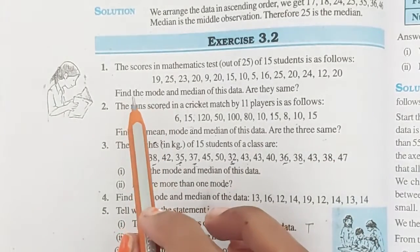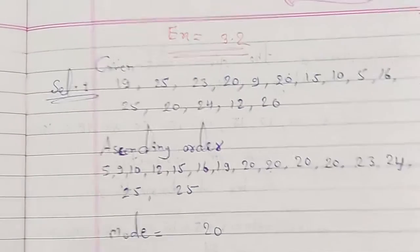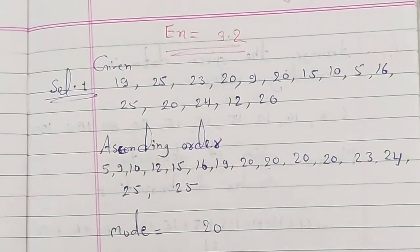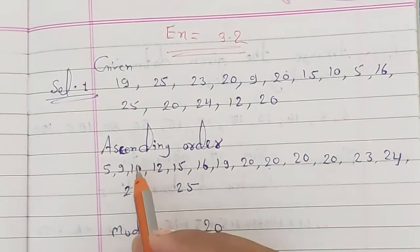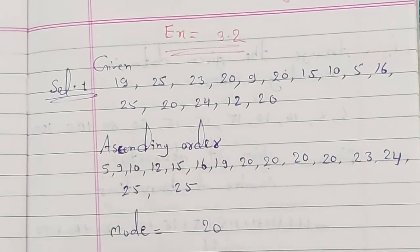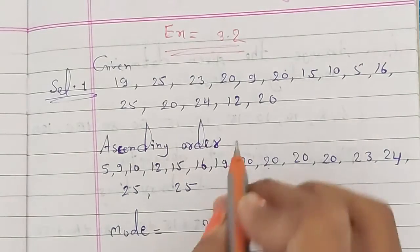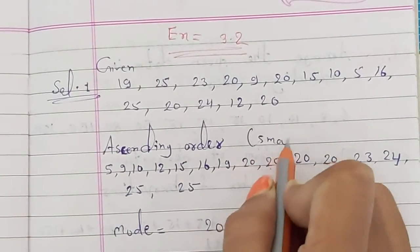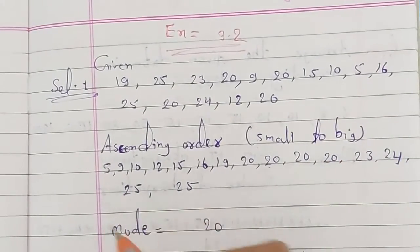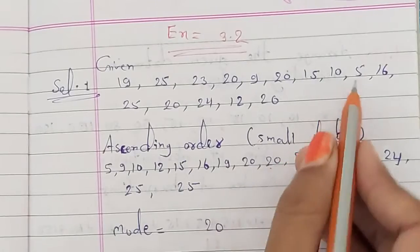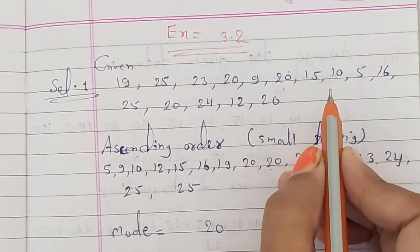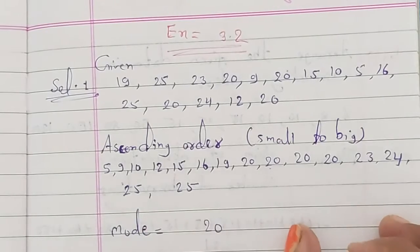Now let's solve. The data given for Q1 is the mathematics test scores. First of all, we write it in ascending order — ascending order means small to big. We go from small digits to big digits: 5, 9, 10...